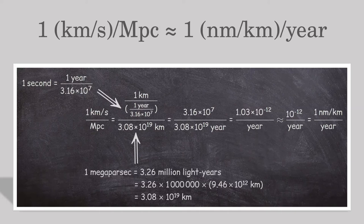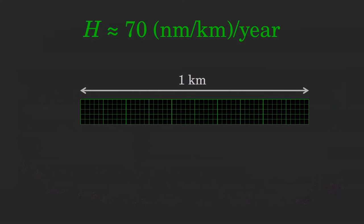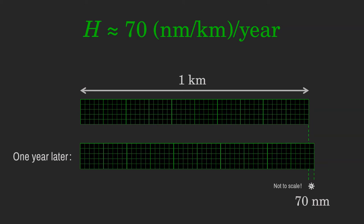So, space expands at roughly 70 nm per km per year, which means that every year, each km of space stretches by 70 nm, about the width of a virus.